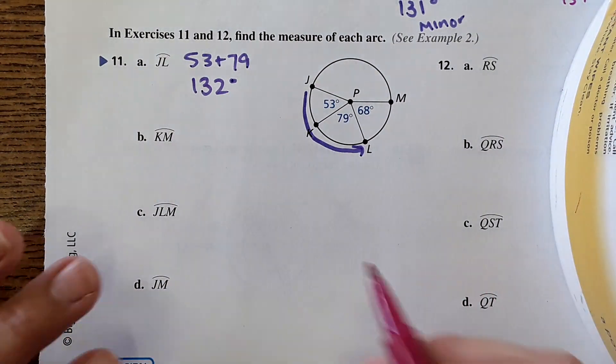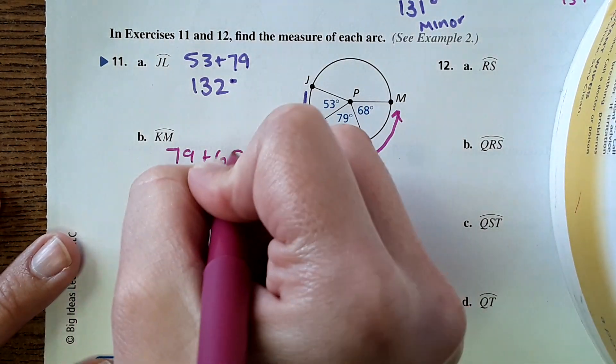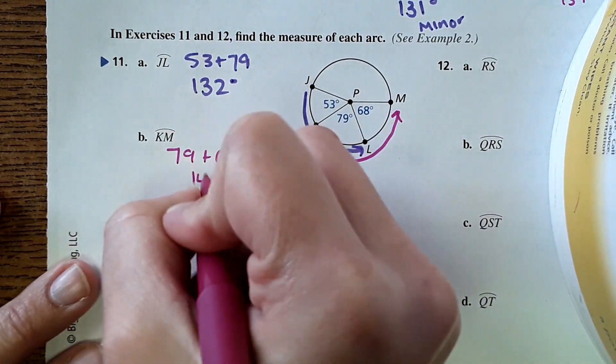Then KM, from here to here, 79 plus 68, 147 degrees.